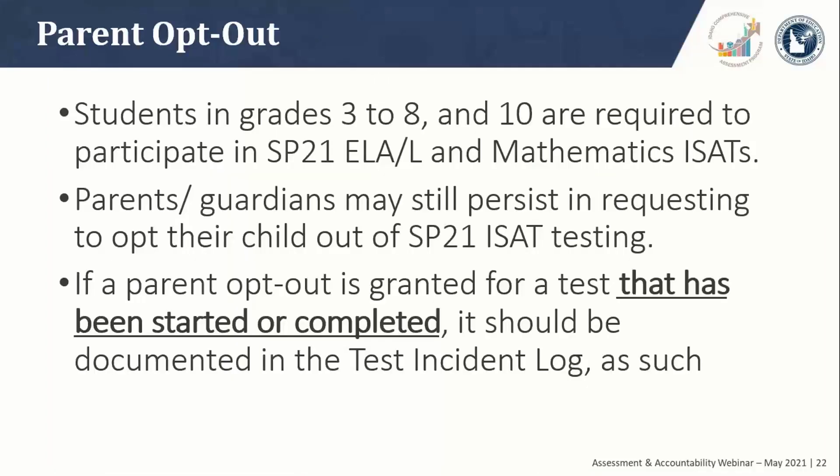Students in grades 3 to 8 and 10 are required to participate in summative testing for Spring 21. Since Spring 20 summative testing was waived, the Idaho SDE knows it is important to gather as much data as possible to determine student achievement and address any potential learning loss. Nevertheless, parents and guardians may still persist in requesting to opt their child out of Spring 21 summative testing. LEAs and/or school leaders can work with parents to inform them of the importance of gathering student performance data. The state will not take parent opt-outs into consideration when calculating participation rates — those students remain in the denominator unless absent during the entire assessment window due to documented medical reasons. If a parent opt-out is granted for a test started or completed, it should be documented in the test incident log.